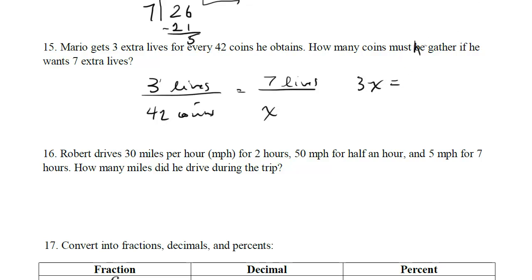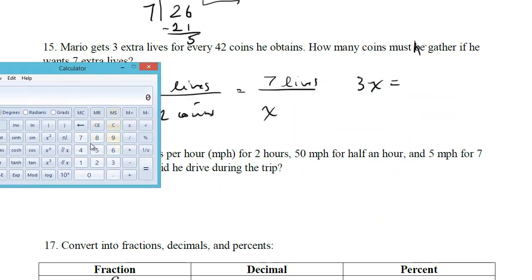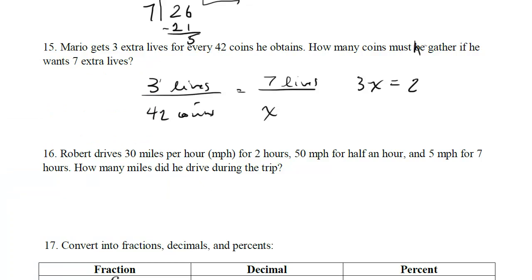Hold on one second, I just have to pull out the calculator. 7 times 42 is 294, divide that by 3, and we get 98, which is our answer. So x is 98.